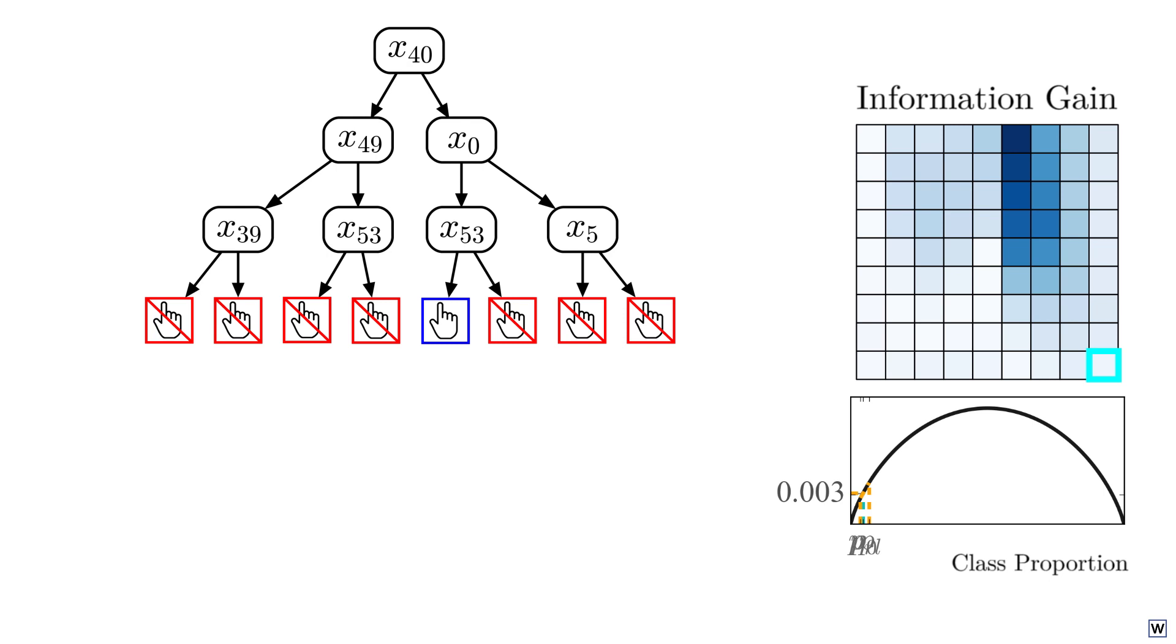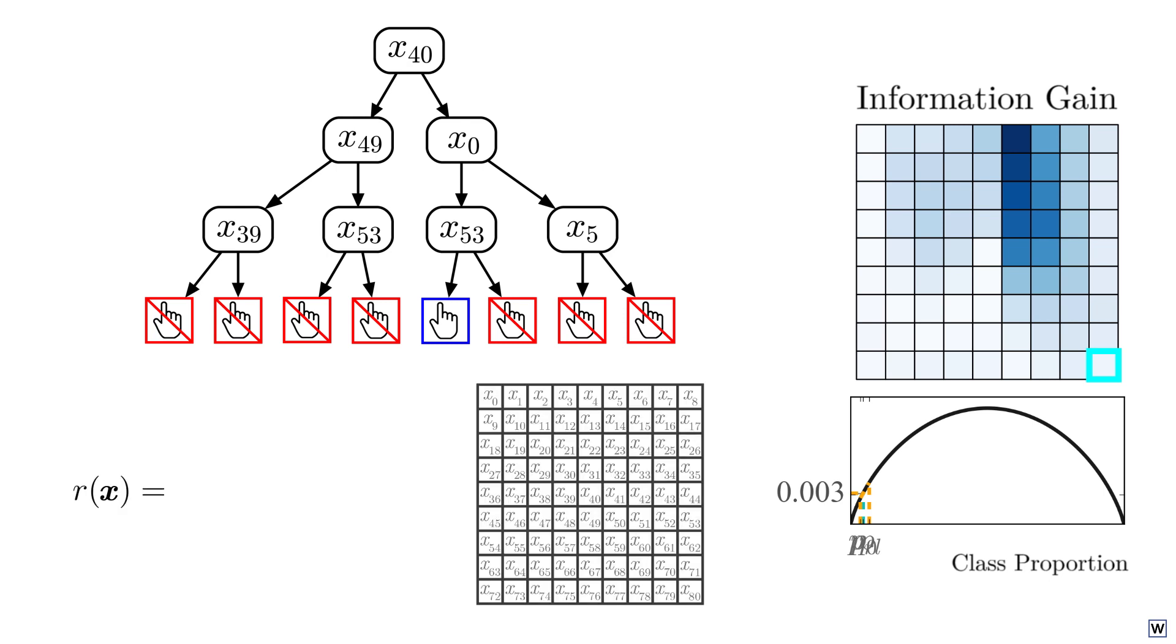This means that using our decision tree, powered by our information gain heuristic, we've learned one rule to identify finger pixels in images. Fingers are examples with a 1 in the x40 position, a 0 in the x0 position, and a 0 in the x53 position. And what's really remarkable here is how good this rule is, and how quickly we were able to find it.